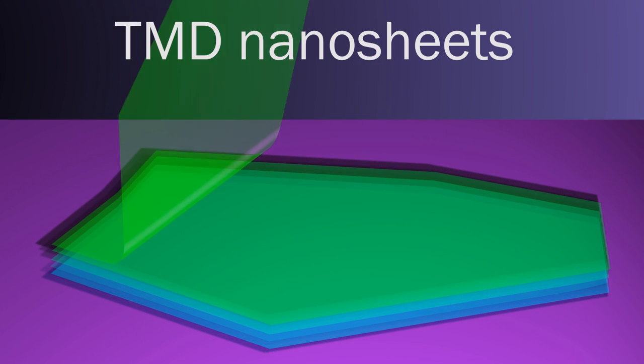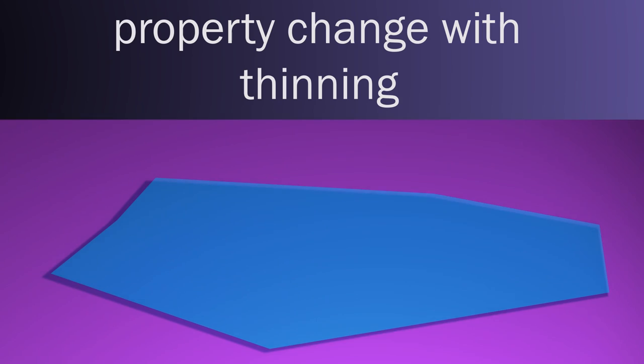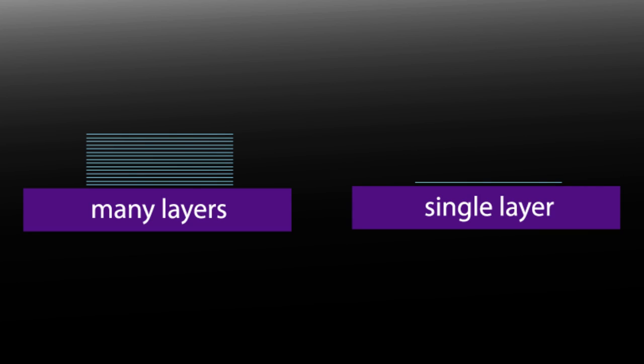Relatively recently, scientists have discovered that interesting property changes occur as these materials get thinner and thinner. Consider a stack of many-layered TMDs alongside a single-layered sheet.